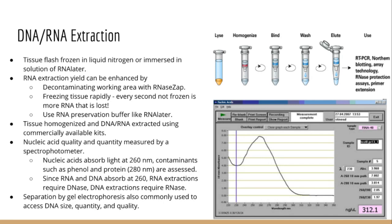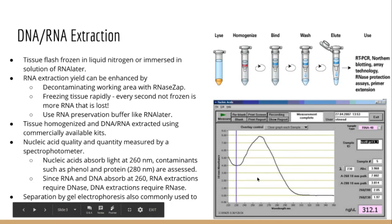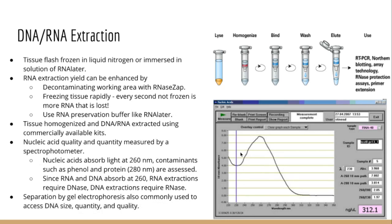Nucleic acid extraction is done almost exclusively with commercially purchased kits. The specifics of how they work are not all that important — the important part is that you follow the step-by-step instructions. In about 30 minutes you will have extracted nucleic acid. Once you have your purified nucleic acid you will want to assess its quality and quantity using a spectrophotometer that measures absorbance at 260 nanometers, with contamination indicated by peaks at 280 or 230. Nucleic acid quality can also be checked through gel electrophoresis, which can be used to separate DNA and RNA.